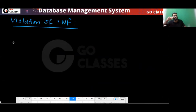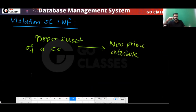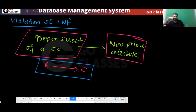The violation of 2NF occurs when a proper subset of some candidate key determines a non-prime attribute. Here, A is a proper subset of the candidate key AB, and A determines the non-prime attribute C. So this is a violation of 2NF — the relation is not in 2NF.